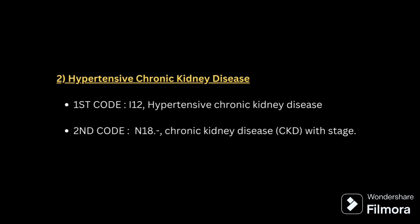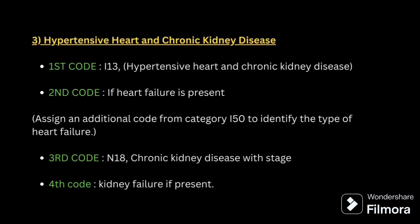For hypertension with CKD, the first code is the combination code I12, and the second code is for CKD with the stage using N18.— A third code for renal failure is added only if renal failure is present. For hypertension with both heart disease and CKD, the combination code is I13. If heart failure is present, give a second code for heart failure, then a third code for CKD with stage, and a fourth code for renal failure if present.